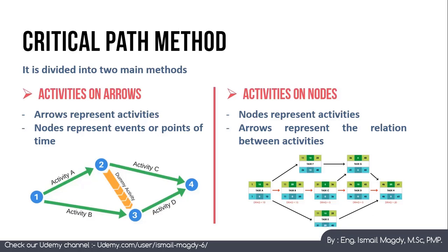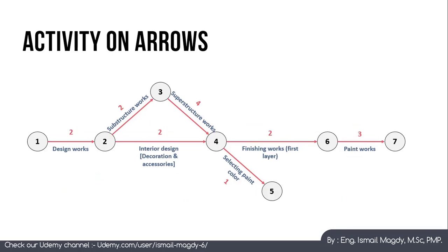Here we can see a sample Activities on Arrows schedule for a construction project. All arrows show a specific activity including its duration in months, while each node represents a specific point in time. For example, node 1 represents the start of the project, and the activity between nodes 1 and 2 is design works, consuming two months.